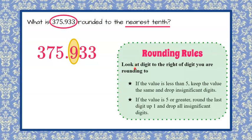When we go over our rounding rules, we are asked to look at the digit to the right of the digit that you're rounding to. So we're going to look at the digit 3, which is the hundredths digit. If the value is less than 5, we're going to keep the value the same and drop the insignificant digits.